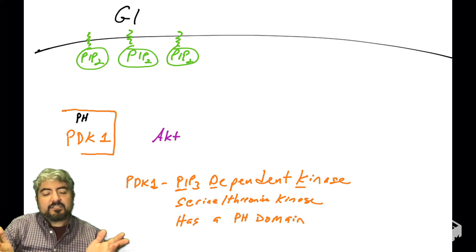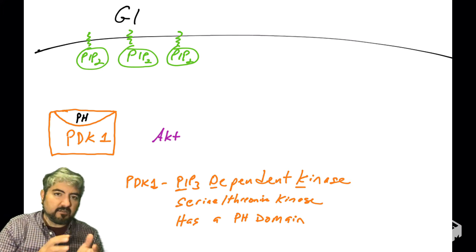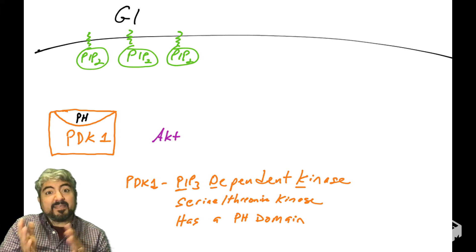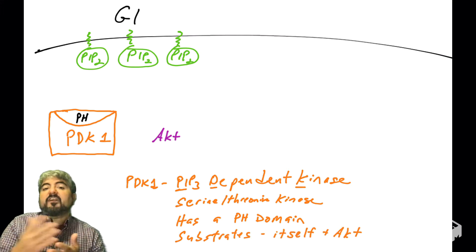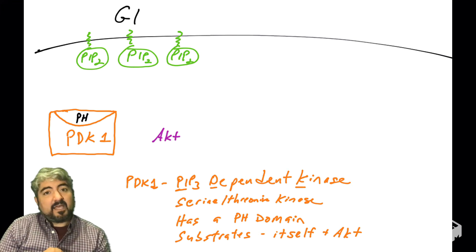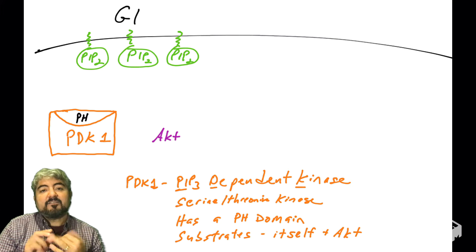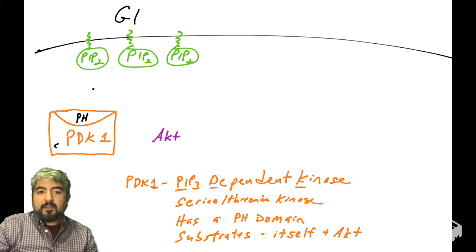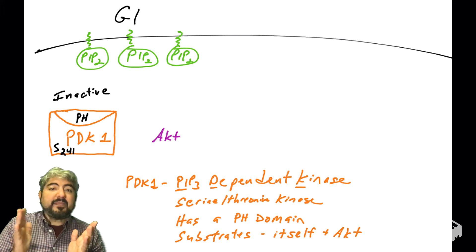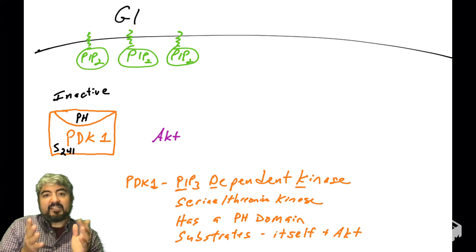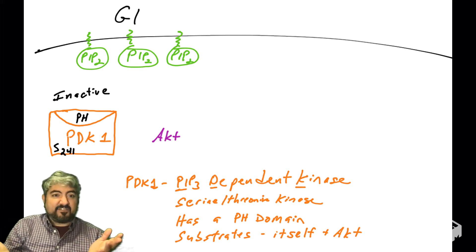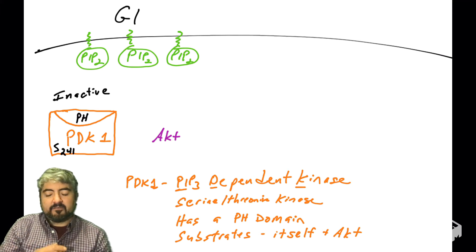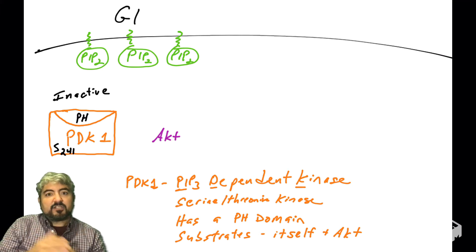PDK1 has a PH domain, and we know PH domains have high affinity for PIP3. PDK1 has two substrates: it can phosphorylate itself and it can phosphorylate AKT. In cells that are in G1, PDK1 is typically not phosphorylated — the serine at position 241 is the autophosphorylation site — and its kinase activity is not active during G1.